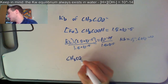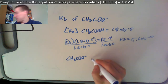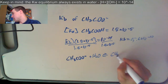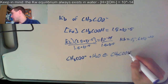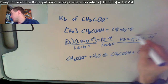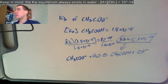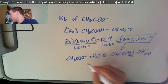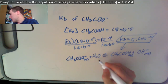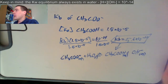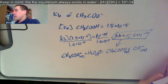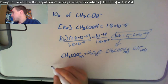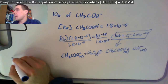That Kb is exactly what we need. The equation is: acetate plus water makes CH3COOH plus OH minus. That Kb is the constant for that equation — the equation we're interested in. Water is liquid so we don't include it, but the other species do count.